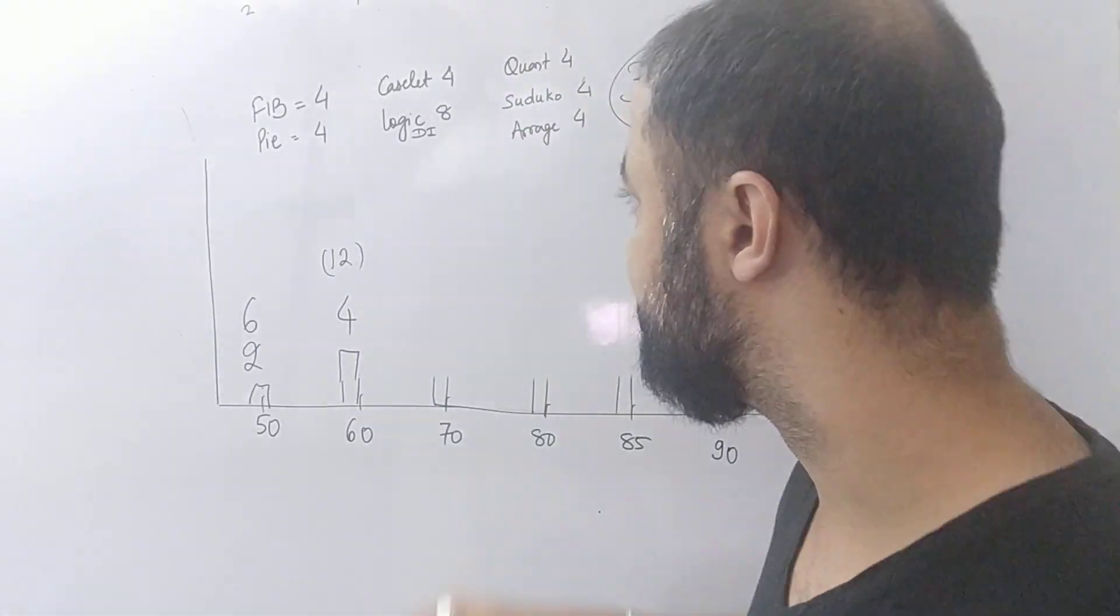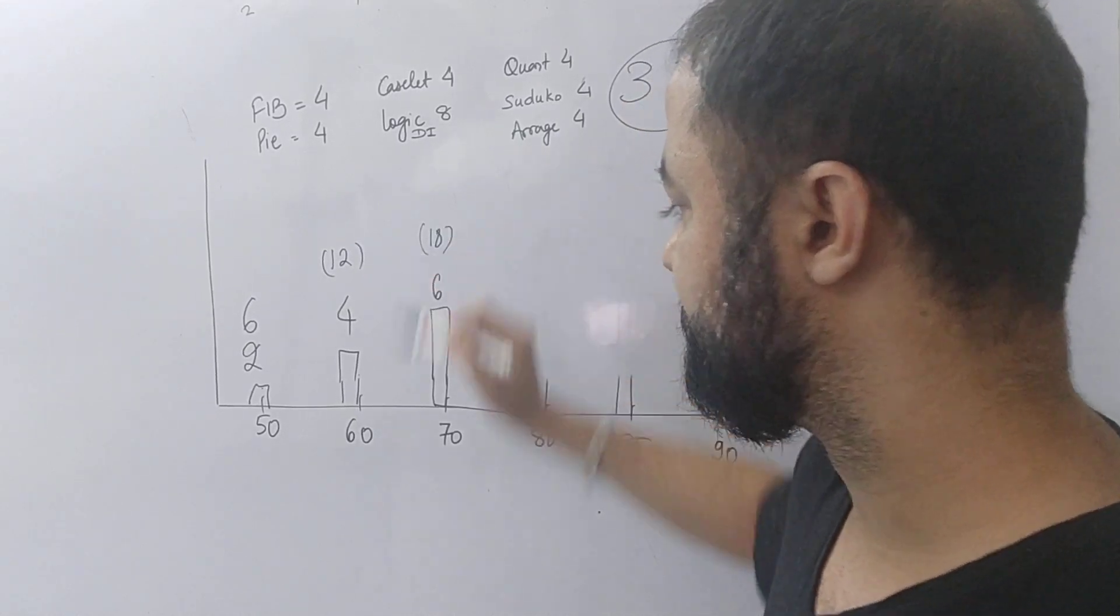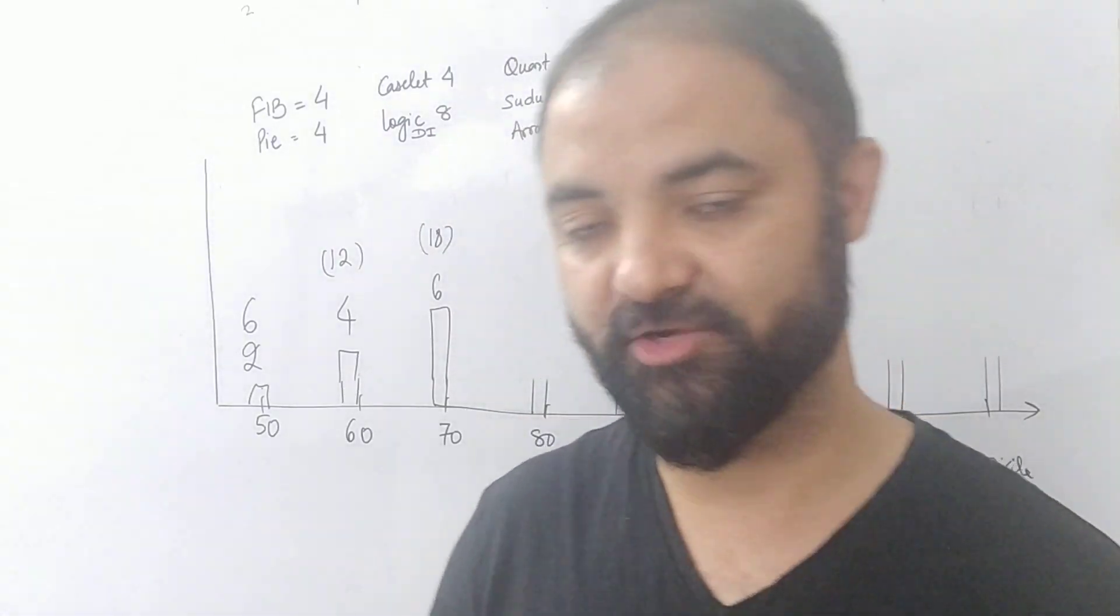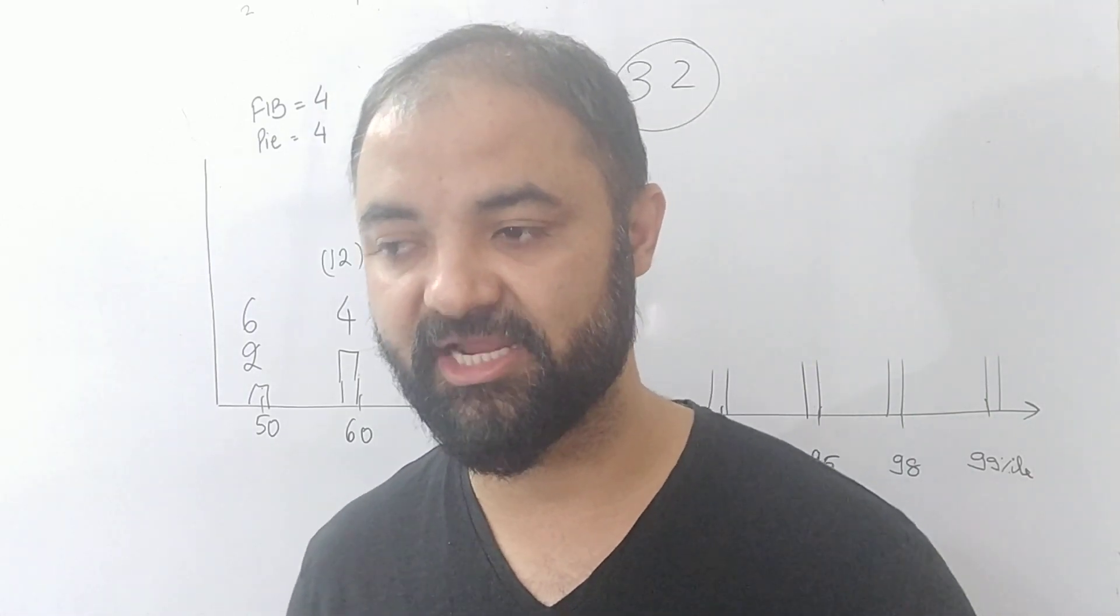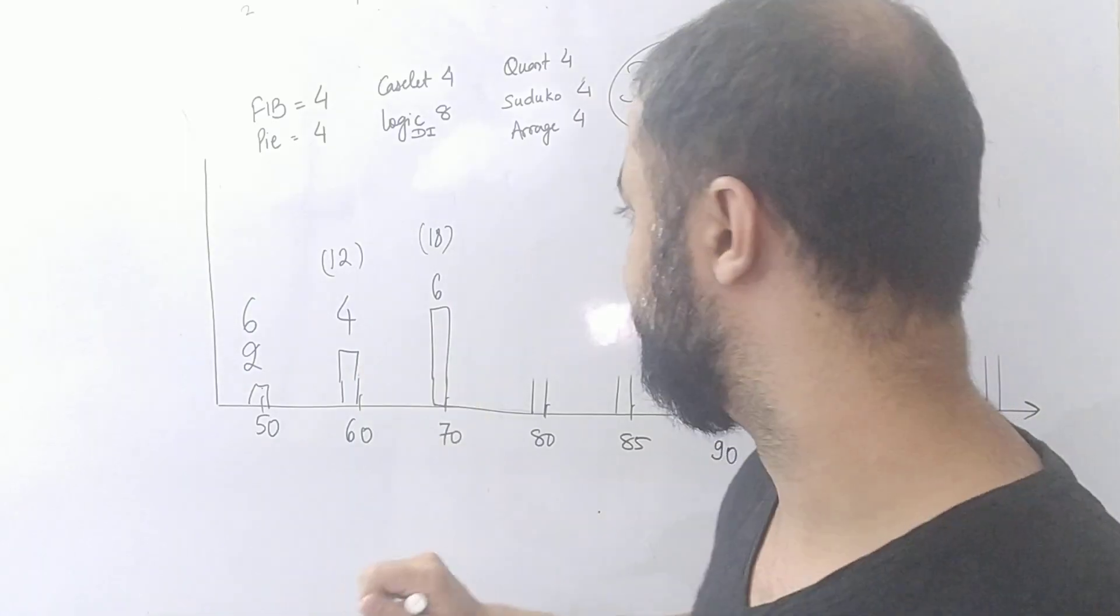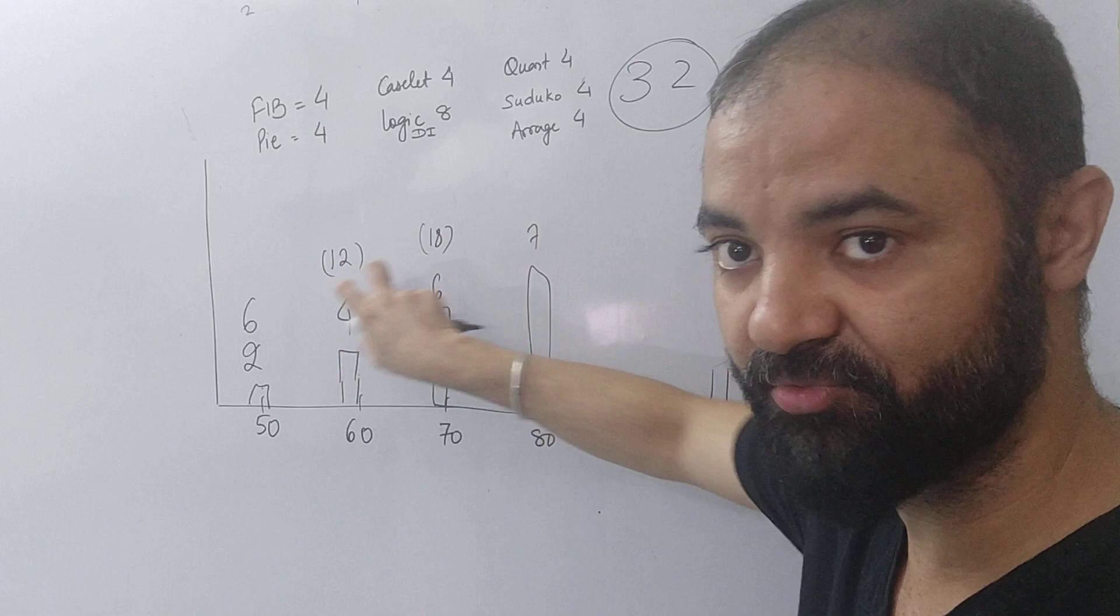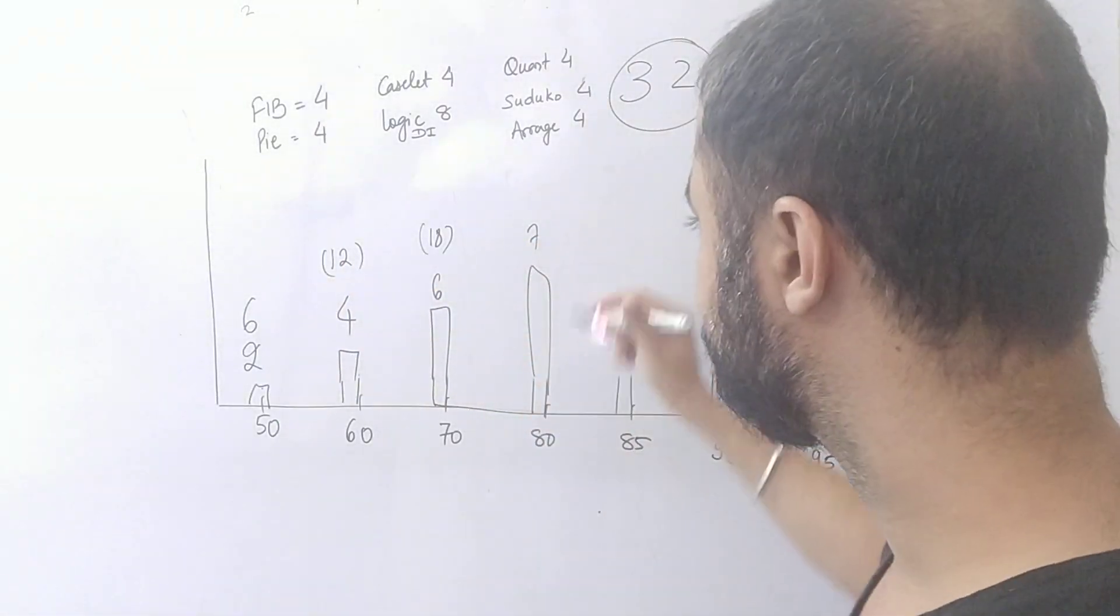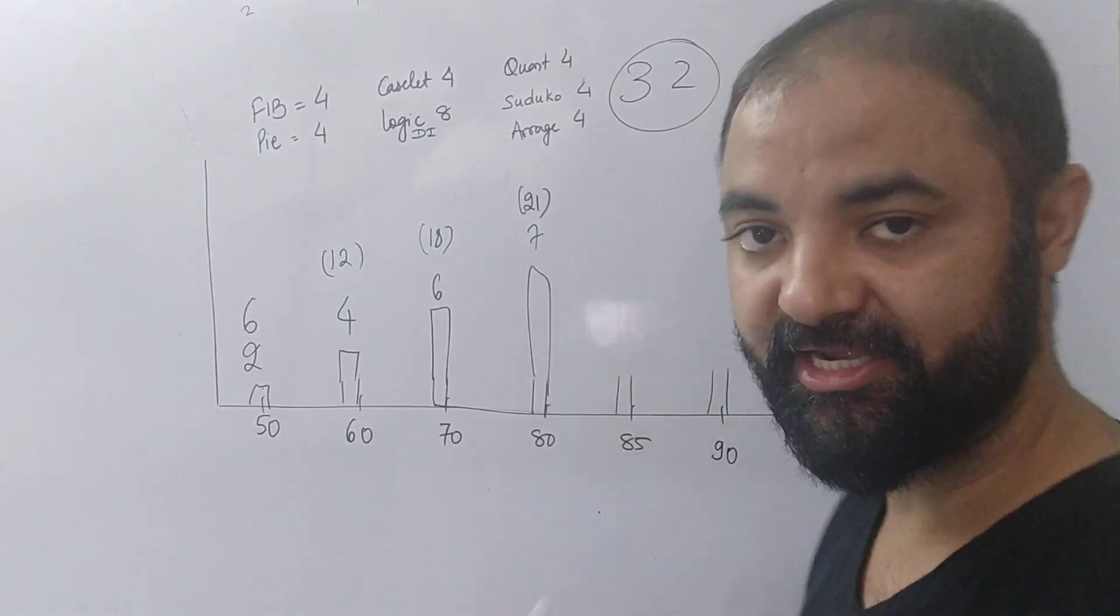70 percentile is around 6 questions correct, which means 18 marks will fetch you 70 percentile. If you are scoring 70-70-70 in quant, verbal, logic, you will start getting college calls. So average fees, average salary is around 6-8 lakhs for people who are scoring 6 questions correct. 80 percentile is 7. It's a bell curve, you can see the gap is more, the gap will reduce as you go. 80-90 is the maximum people. 7 questions right, which means 21 marks is your 80 percentile.